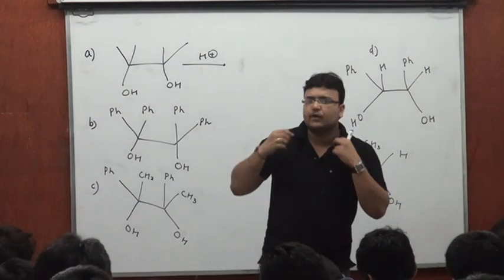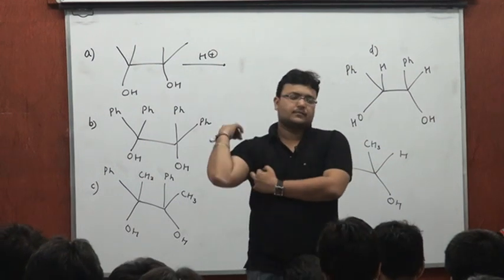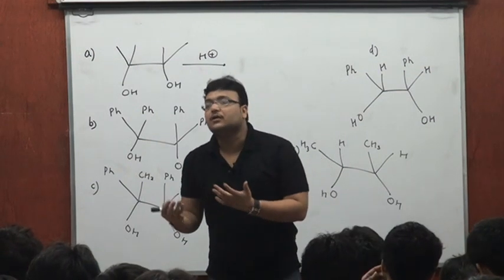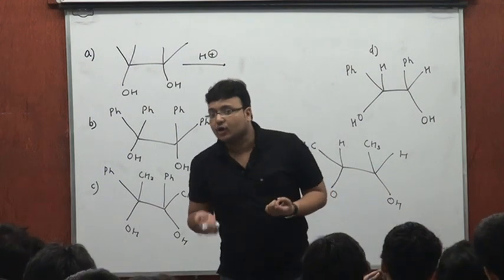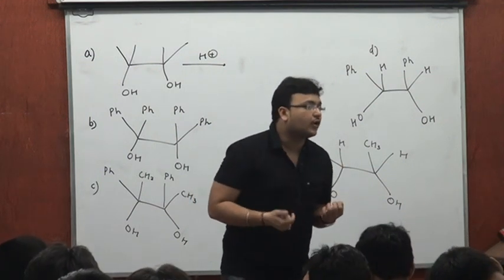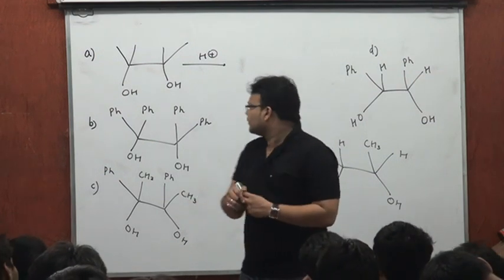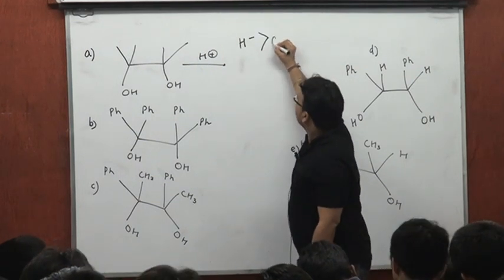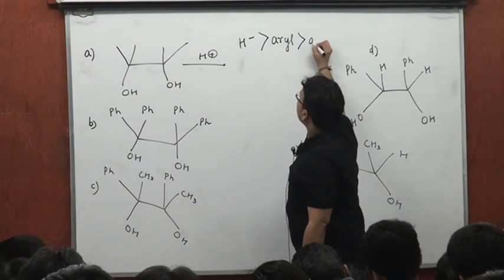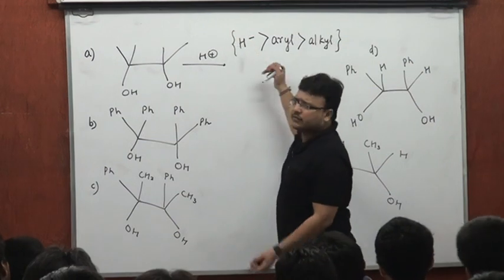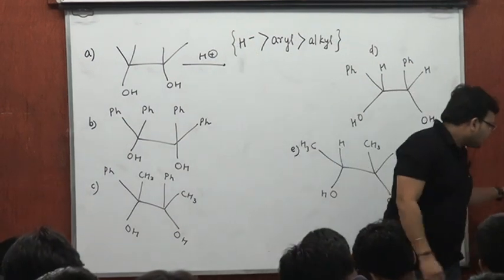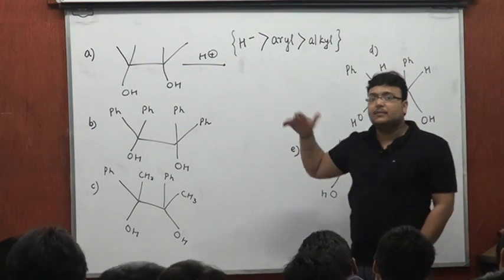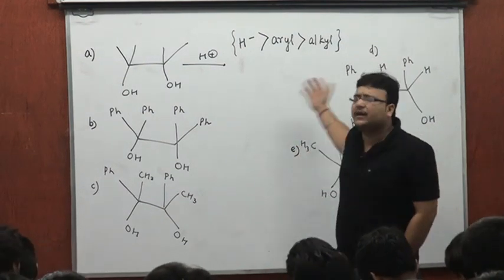When it's about different groups, we'll want to know a migratory order. To begin with, the migratory order is: hydride > aryl > alkyl. This is called the migratory aptitude. We will do more value addition to this order, but to begin with you will want to know this order: hydride more than aryl more than alkyl.